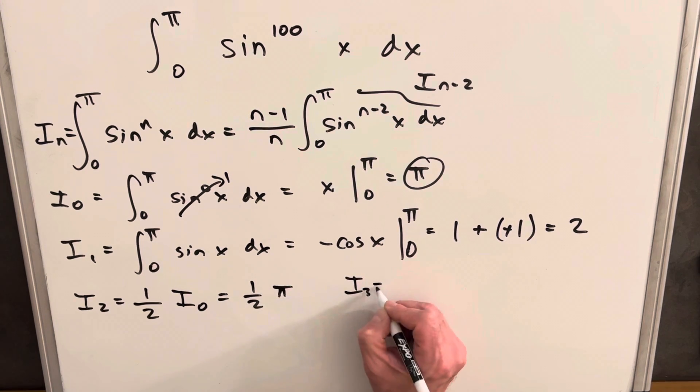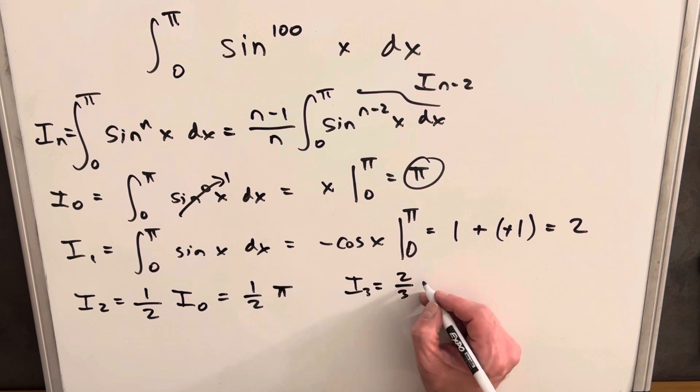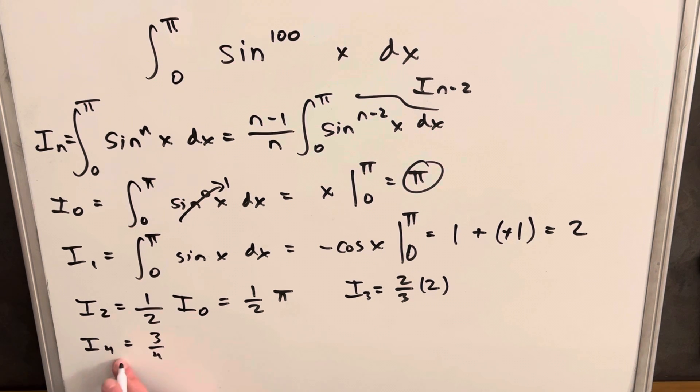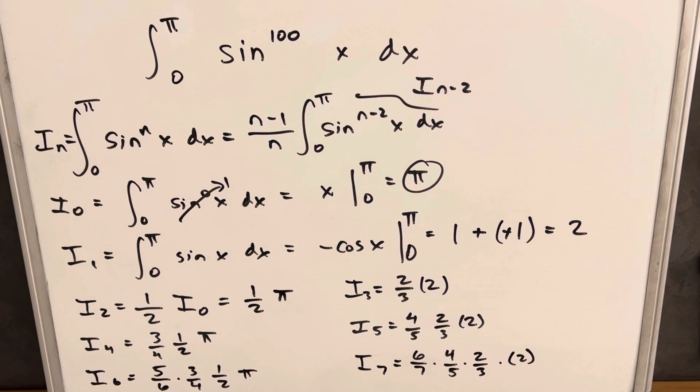We could look at i sub 3. That's going to be 3 minus 1 is 2 over 3 times i sub 1, but i sub 1 is just 2. This is going to be 3 over 4 times i sub 2, but we have it right there. I'm not going to multiply this out. We're just going to do it this way. Now I've added the value for i sub 6, i sub 7. And at this point, I think we can clearly see the pattern that this is going 5, 3, 1, odd numbers, decreasing. This one's going 6, 4, 2, even numbers, decreasing.